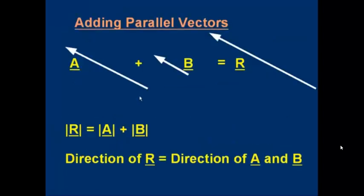Can we come up with a simple rule for adding parallel vectors? Yes — A plus B equals R. The magnitude of the resultant is the magnitude of the first vector plus the magnitude of the second vector, and if there were more parallel vectors we could continue that. The direction of the resultant is simply the direction of the vectors we're adding together. That's only true for parallel vectors.